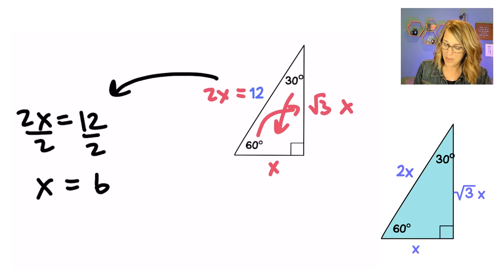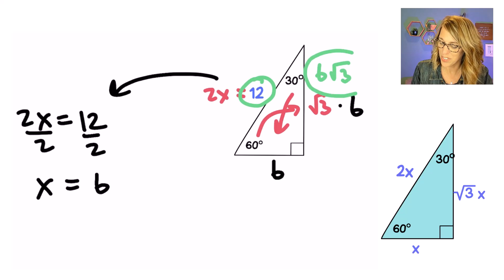So I can go back up to everywhere where I've got an x there and I can replace those with a 6. So I've got a 6 there and a 6 there and the sides of my triangle are the 12 that I was given. I'm going to write this next side in order so the 6 comes first. I've got 6 radical 3 and a 6.